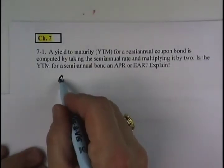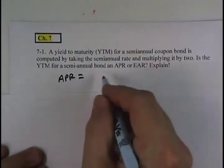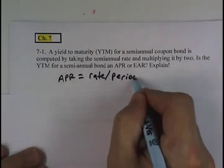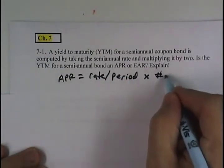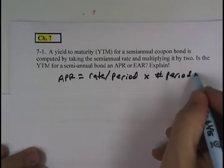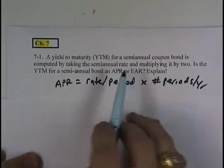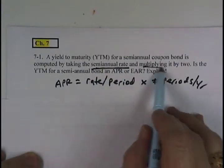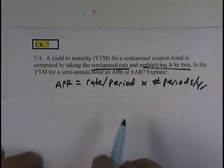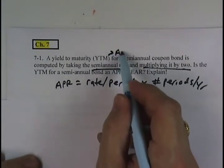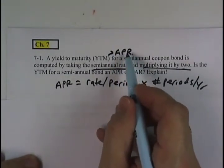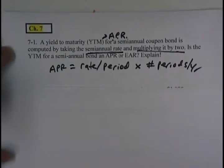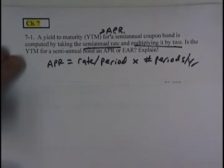Well, an APR is the rate per period multiplied by the number of periods per year. And since that is exactly what we do on a semi-annual bond, we take the rate per period and simply double it, then a yield to maturity is an APR. It's a semi-annual rate that's doubled for a semi-annual bond. It doesn't reflect compounding during the year.